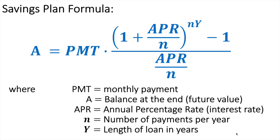Let's bring in our savings plan formula. This is like our investment formula. This looks like a big one with a lot of parts to it, but it's not too bad. PMT is our monthly payment. APR, of course, is our interest rate — notice that's located in two different spots. N is the number of payments; for everything we're going to do today, that's going to be 12.